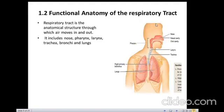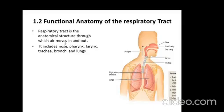The functional anatomy of the respiratory tract shows the path through which air moves. It enters through the nose, passes through the pharynx — which is a common passage of air and food — then from there it enters the airways. It does not enter the esophagus because there is the epiglottis, which prevents food particles from entering the airways.